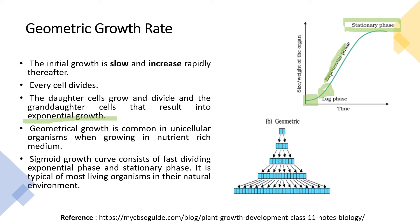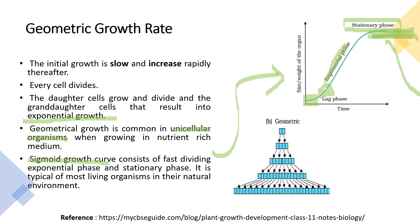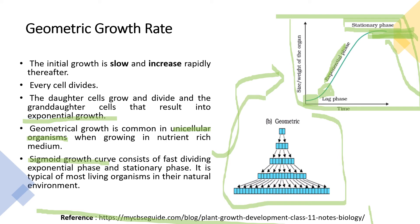Geometric growth is common in unicellular organisms growing in nutrient-rich medium. The sigmoidal growth curve represents this growth, consisting of a fast-dividing exponential phase and then a stationary phase, where growth levels off, followed by a death phase. This pattern is typical of most living organisms in their natural environment.